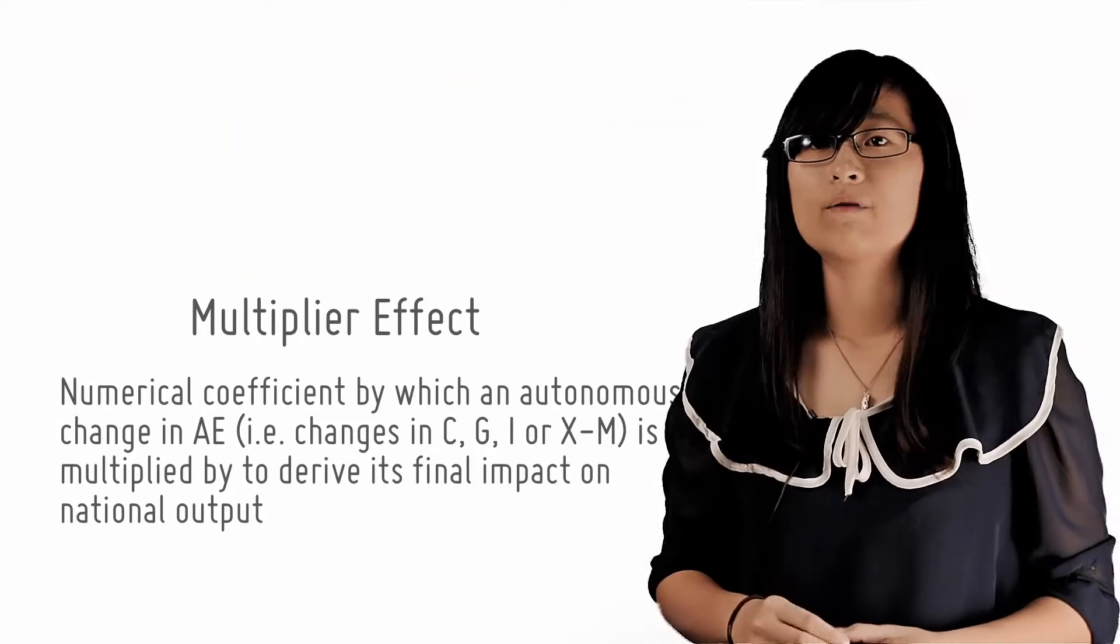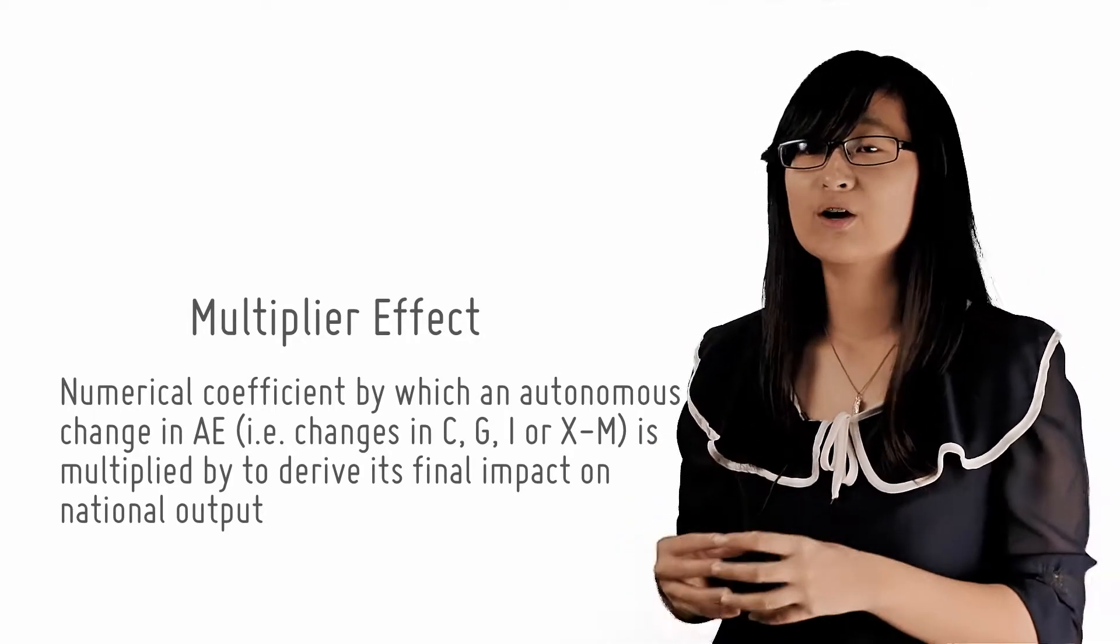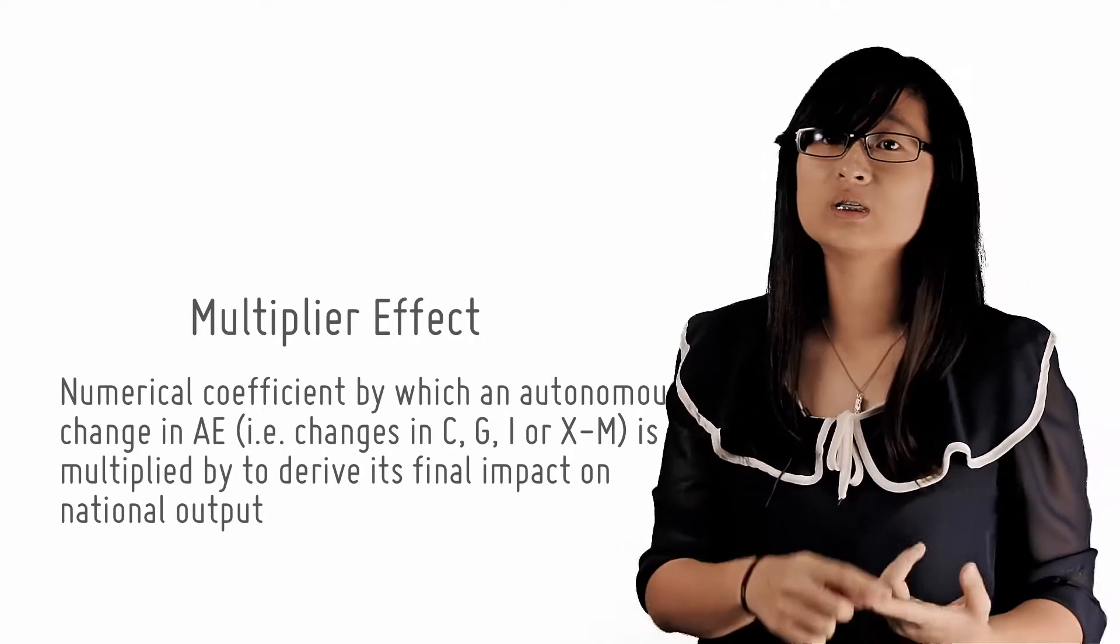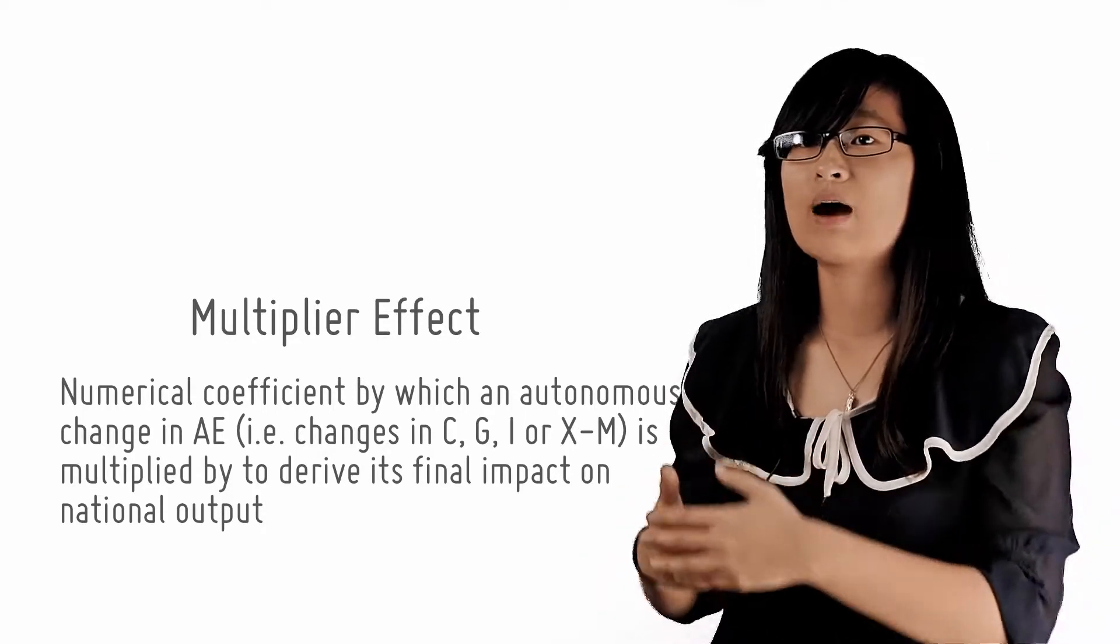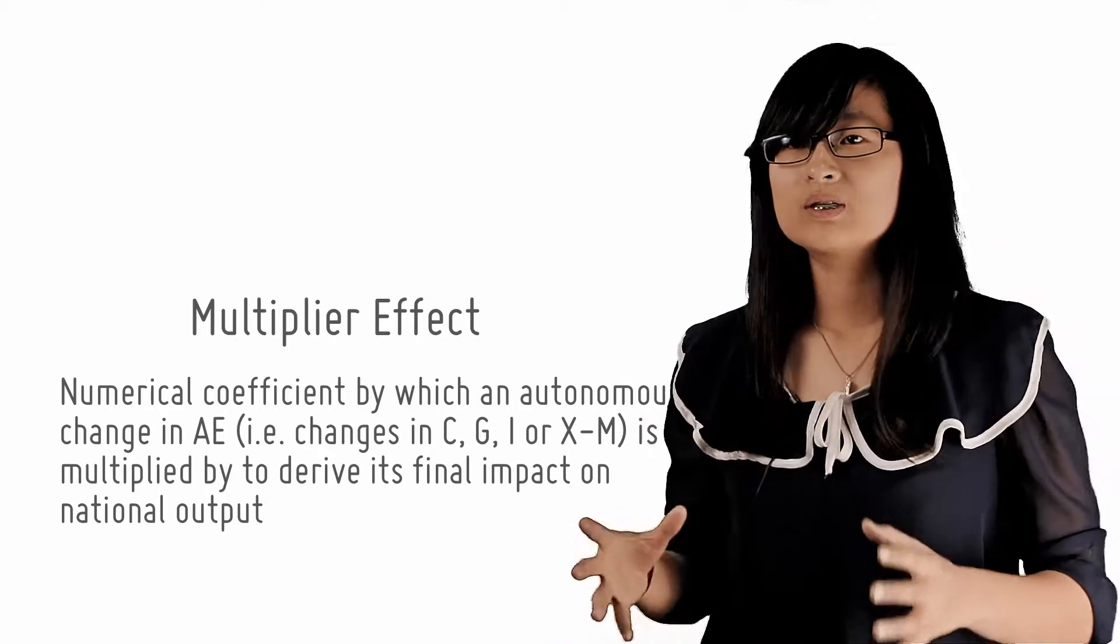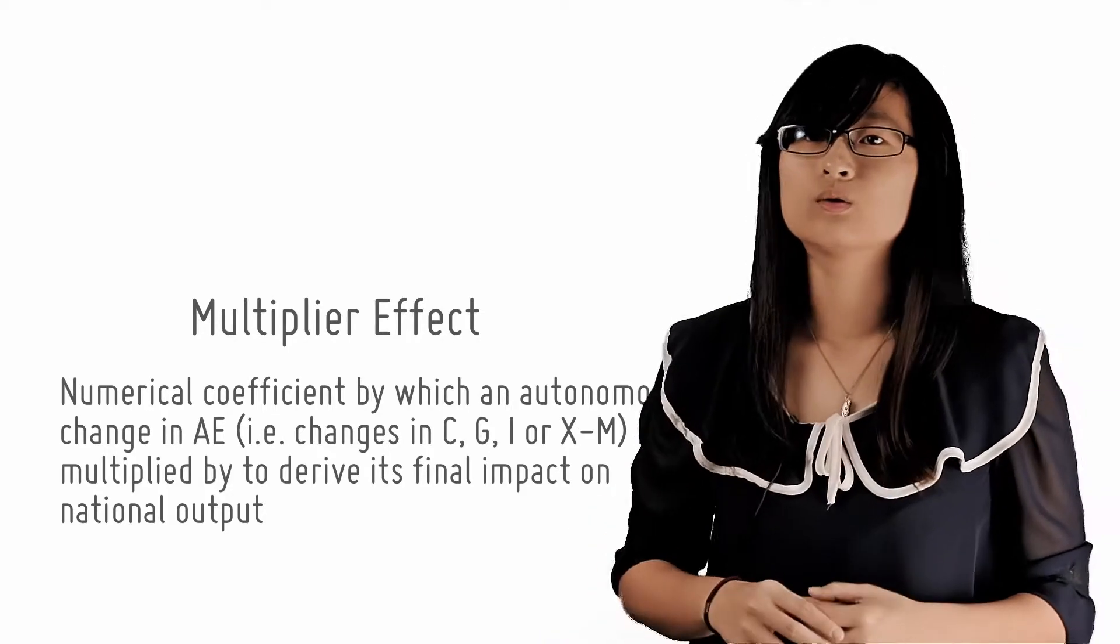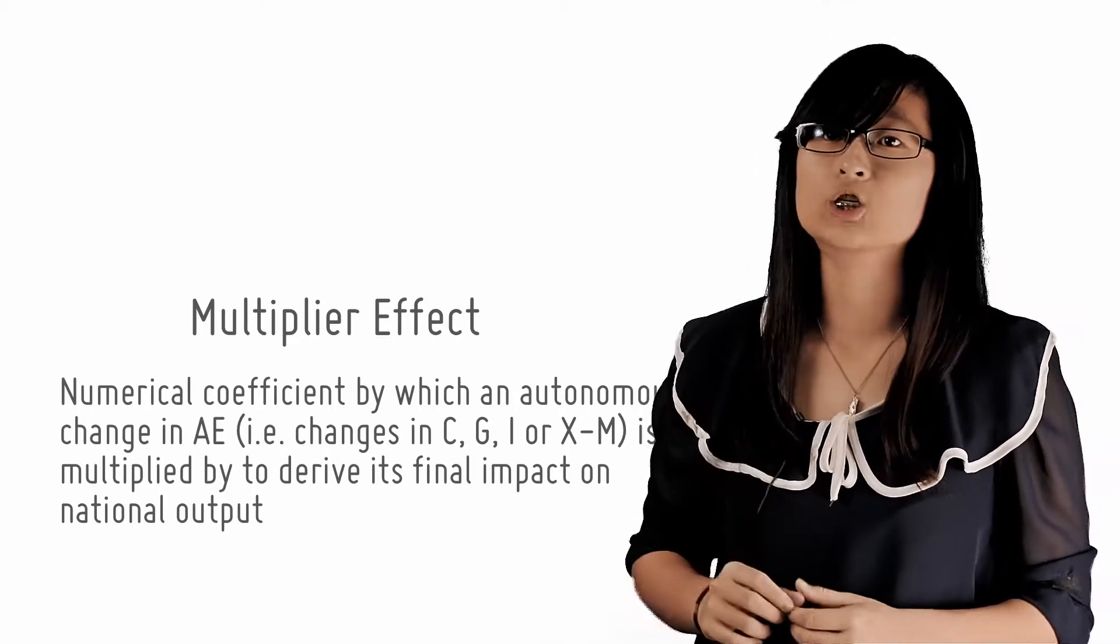The multiplier effect is defined as a numerical coefficient by which an autonomous change in aggregate expenditure, in other words changes in C, G, I or X minus M, is multiplied by to derive its final impact on national output. At the moment this seems like quite a mouthful, so for now let's just have a quick look at the multiplier effect in action.